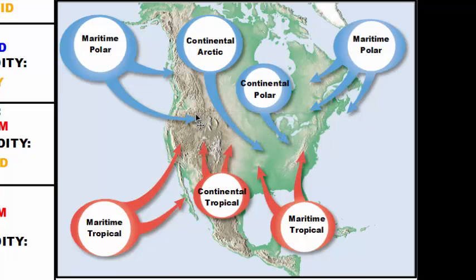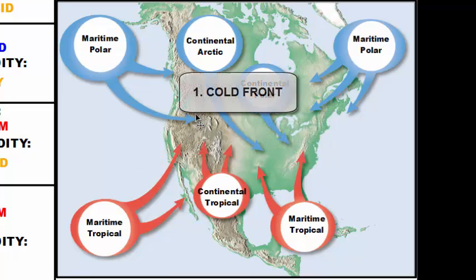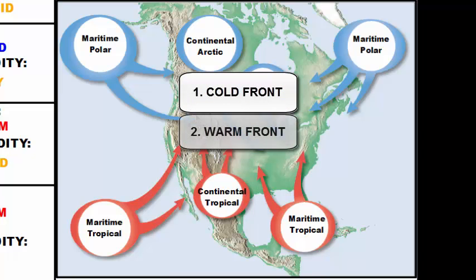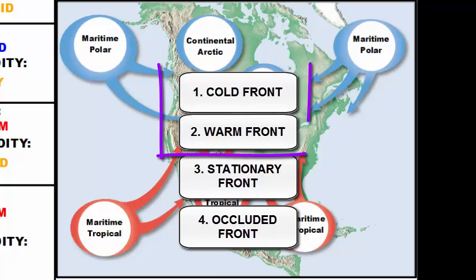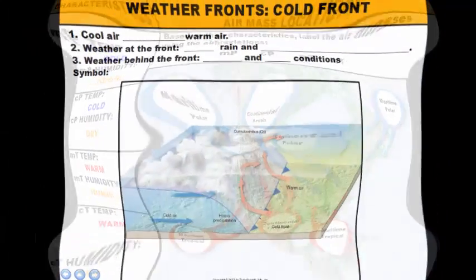A front is essentially the boundary between two different air masses where weather occurs. There are four major types of fronts: cold fronts, warm fronts, stationary fronts, and occluded fronts. But in this lesson we're only going to concentrate on cold and warm fronts.